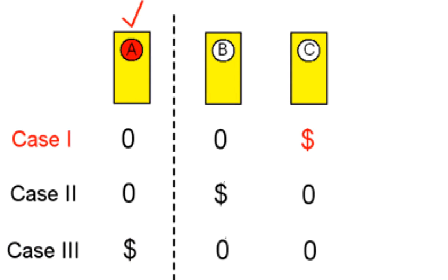If you're in case one, where you chose door A and the prize is behind door C, the host will obviously reveal the empty door B to you. In which case, in order to win, you need to switch from door A to door C.